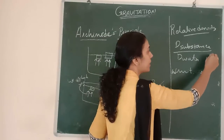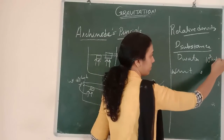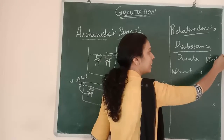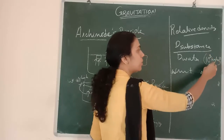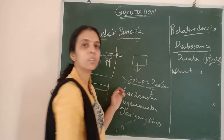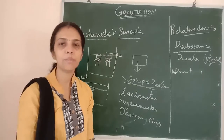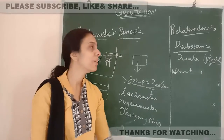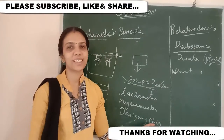The density of water is 1 × 10³ kilogram per meter cube. Usually it will be given in the data, but if it is not given, you can write 10³ kg/m³.